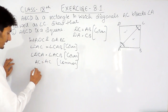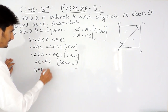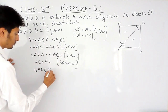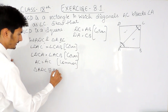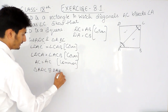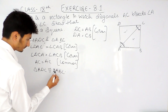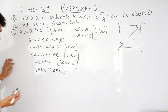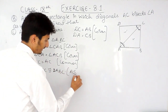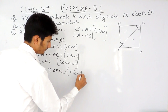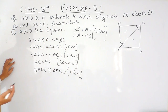We have proved that one angle, one side, and one angle in both triangles are equal. So by the Angle-Side-Angle property, we can conclude that triangle ADC is congruent to triangle ABC, by the ASA property of congruency.